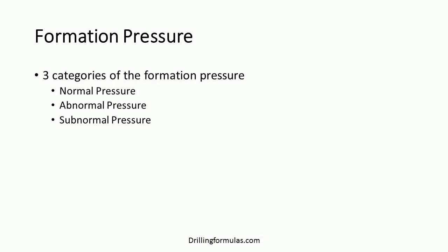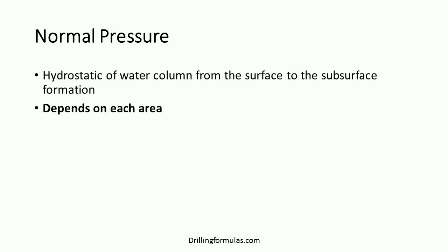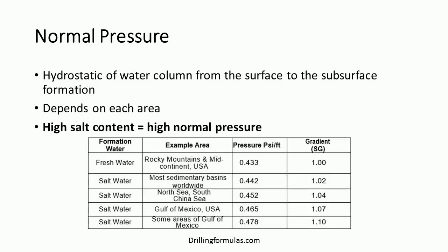Formation pressure is the pressure of fluid contained in pore space of rock, and there are three categories of formation pressure: normal pressure, abnormal pressure, and subnormal pressure. Normal pressure is the hydrostatic pressure of a water column from the surface to the subsurface formation. It can be simply stated that normal pressure is equal to the hydrostatic pressure gradient of water in pore spaces of formations in each area.